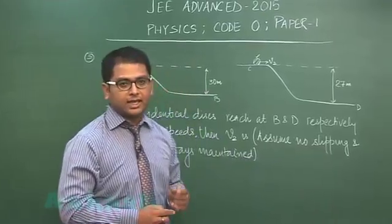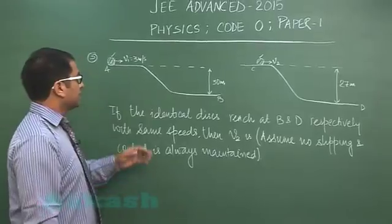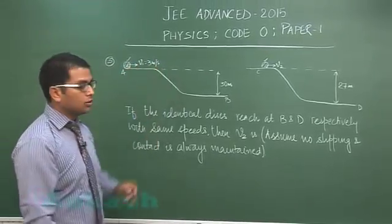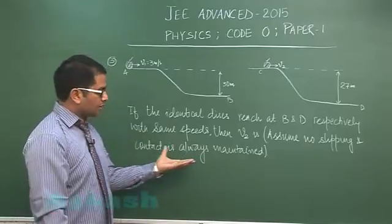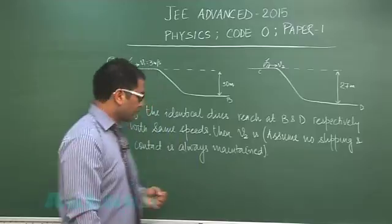Some conditions: assume no slipping, that means the condition of pure rolling has to be put, and contact is always maintained. Because sometimes chances are that in these situations the disk loses contact, but that is not there. So the question has been made fairly simple.